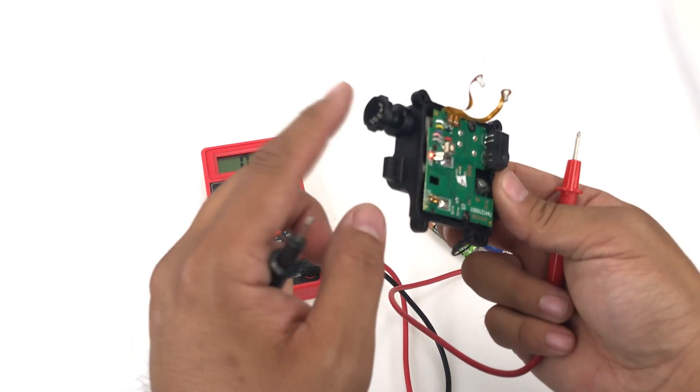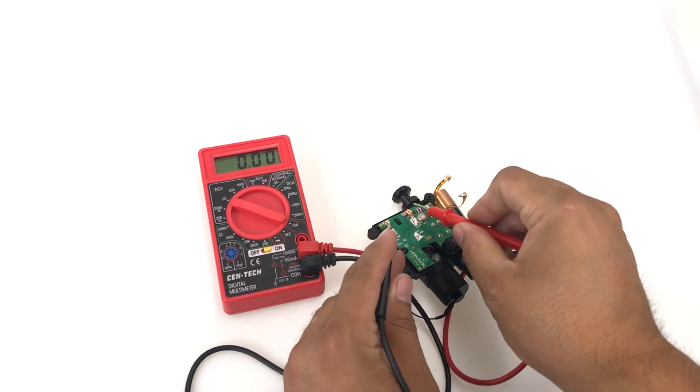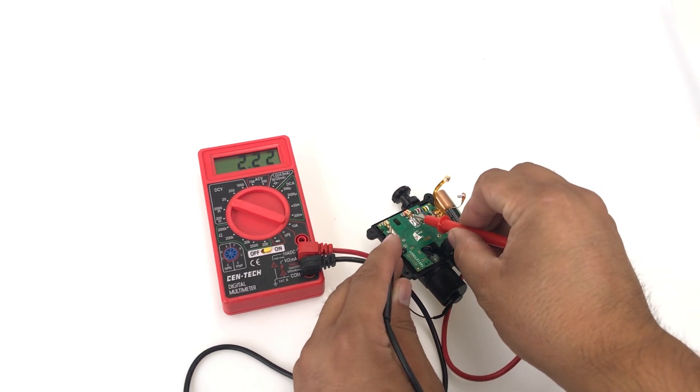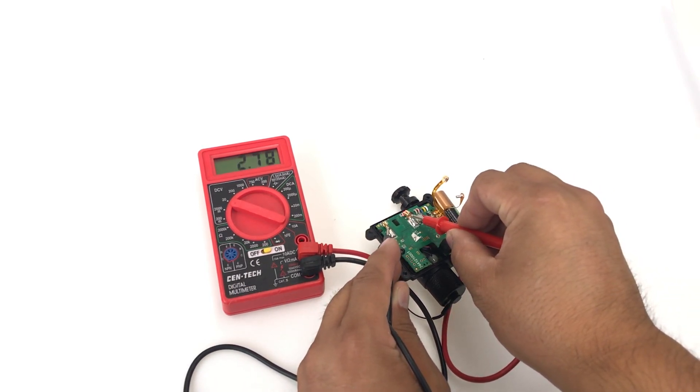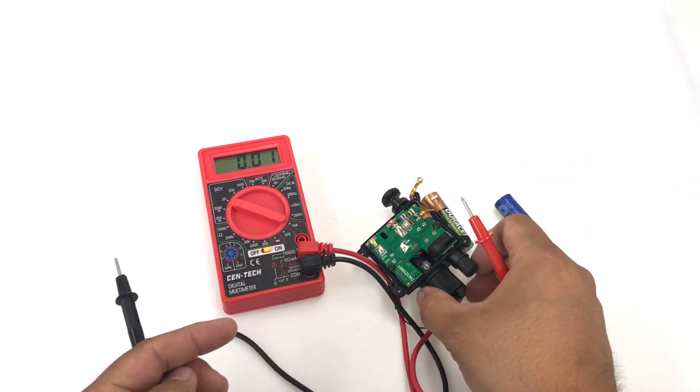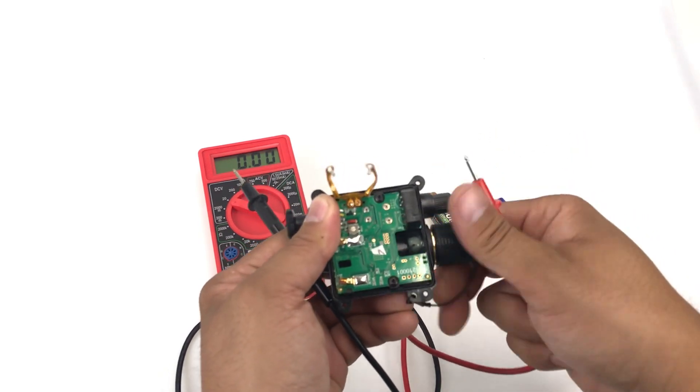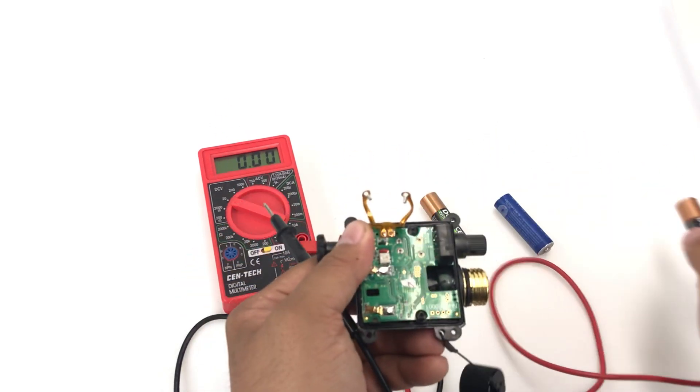You can see the little LED. I turned the IR LED on. I'm getting 2.79 volts out of a regular AA battery. Not quite 3 volts, but close enough.